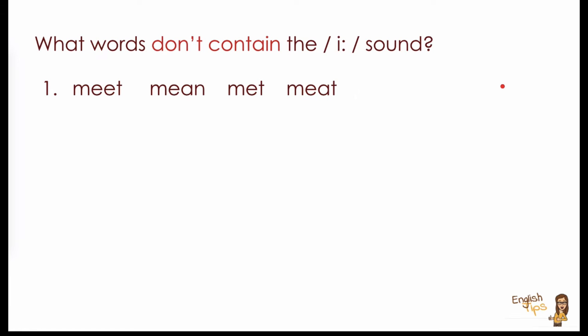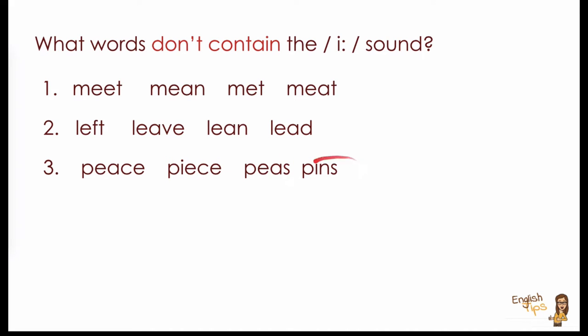So it's time to practice now. We are going to listen to groups of four words and there are some words that don't contain the /i:/ sound. Can you identify them? Let's see. Group number one: meet, mean, met, meat. Group number two: left, leave, lean, lead.